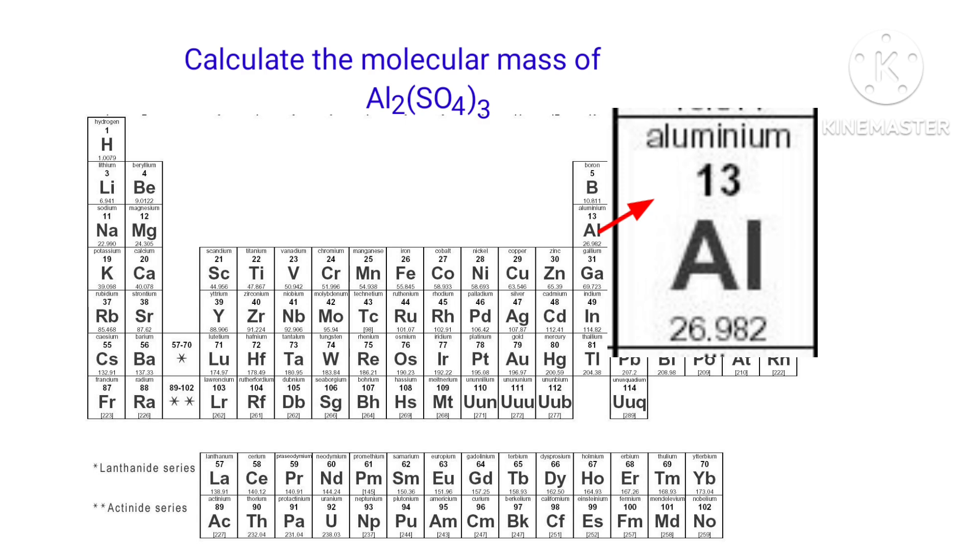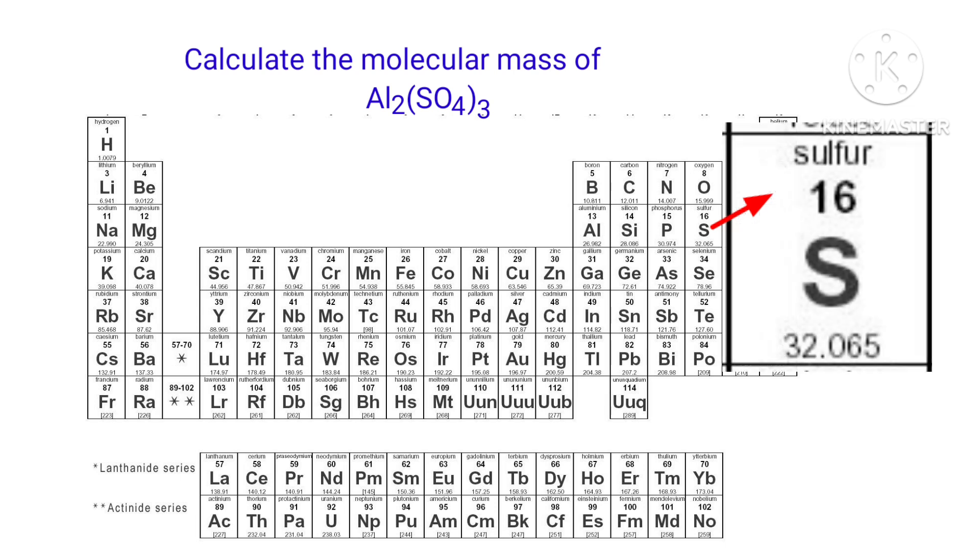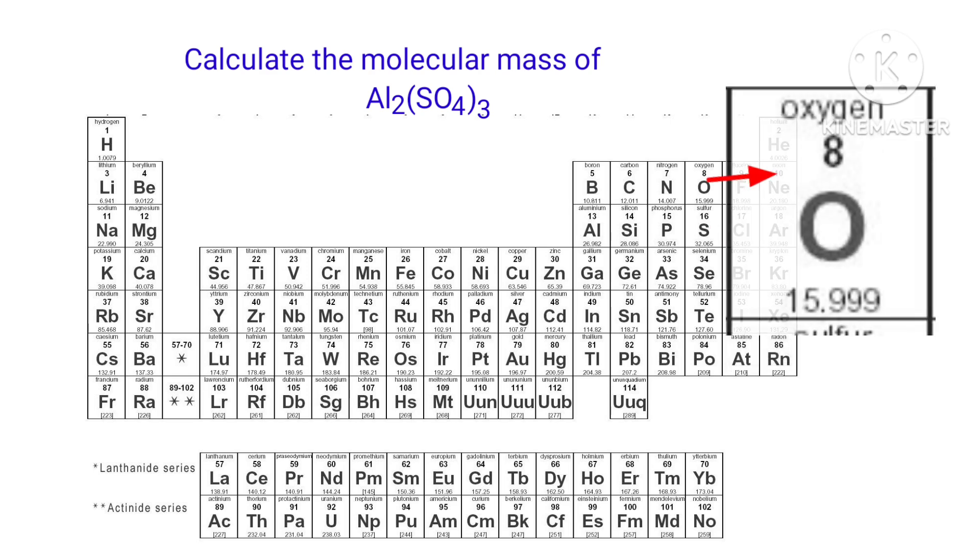The atomic mass of Aluminium is 26.982, the atomic mass of Sulphur is 32.065, and the atomic mass of Oxygen is 15.999.